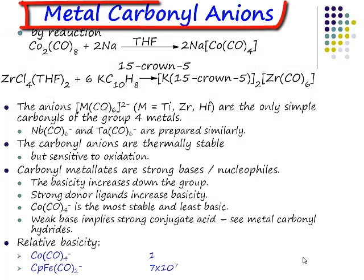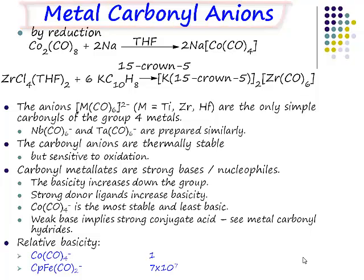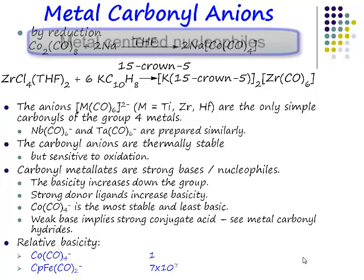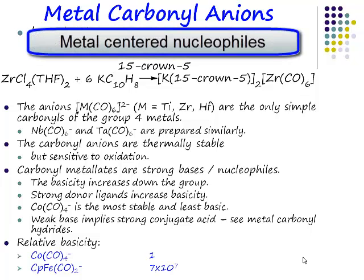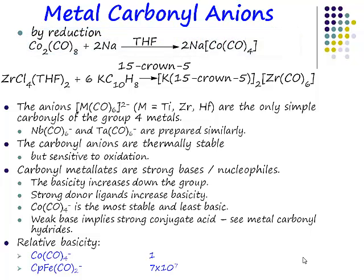These metal carbonyl anions have negative charge centred on the metal. That means they are metal-centred bases, or if you like, metal-centred nucleophiles. You're used to drawing a lone pair of electrons on a heteroatom and having it react as a base or as a nucleophile in your reaction mechanisms and pushing the arrows. There's no fundamental difference here.